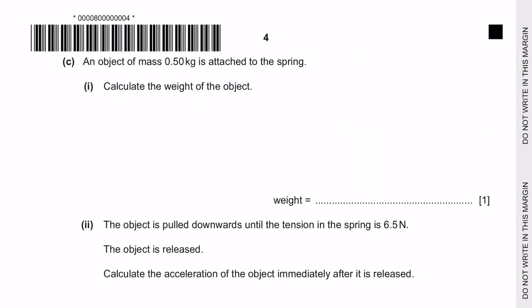Part C: an object of mass 0.5 kg is attached to the spring. Calculate the weight of the object. You have been given mass and are required to find weight. The formula to calculate weight is mass times gravitational acceleration, giving us 4.9 N. Don't forget your units for weight are Newtons.